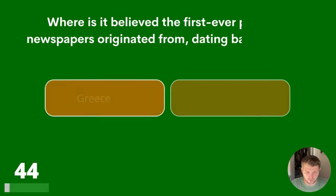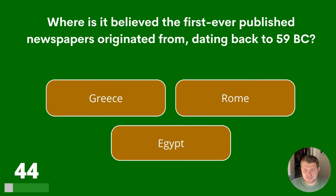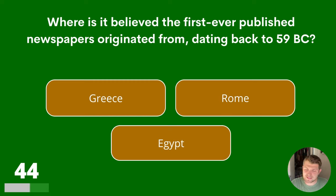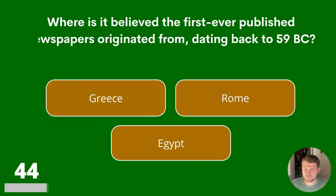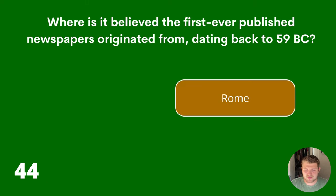Question 44. Where is it believed the first ever published newspapers originated from, dating back to 59 BC? Greece, Rome or Egypt? The answer is Rome.